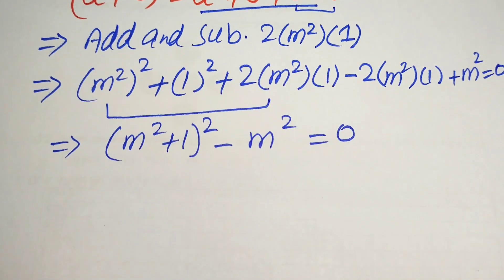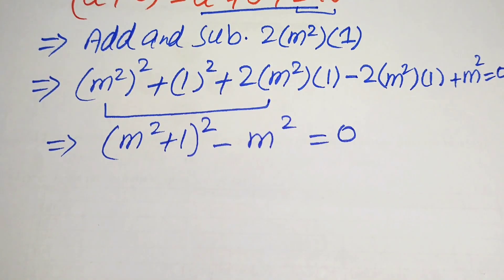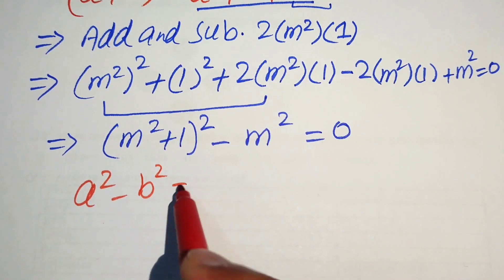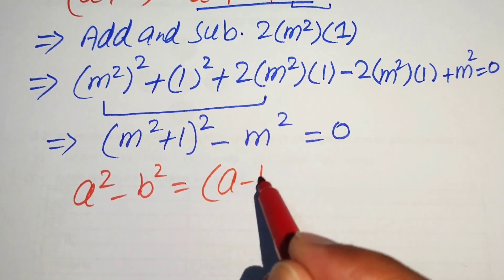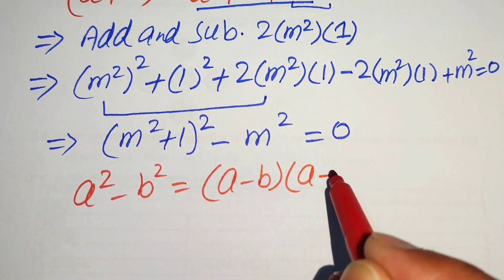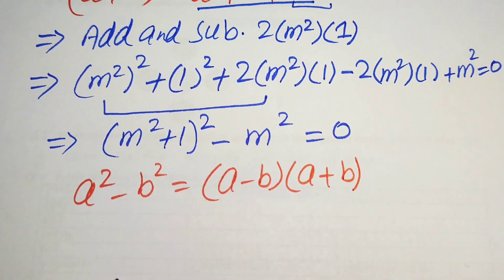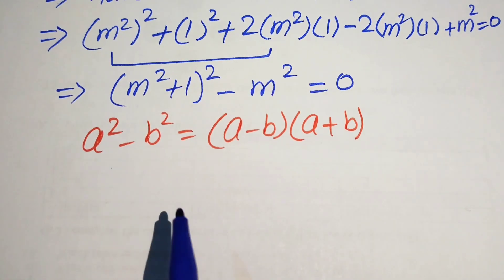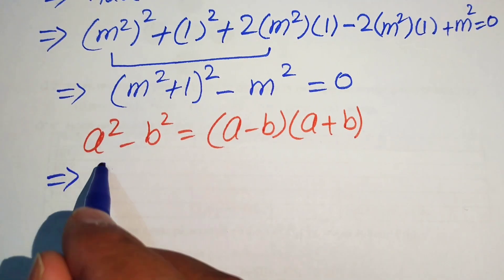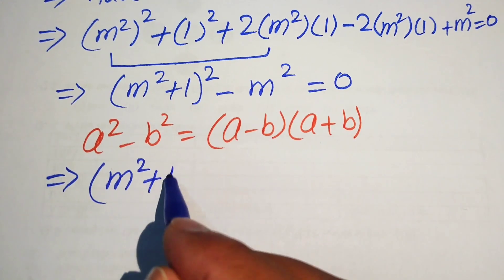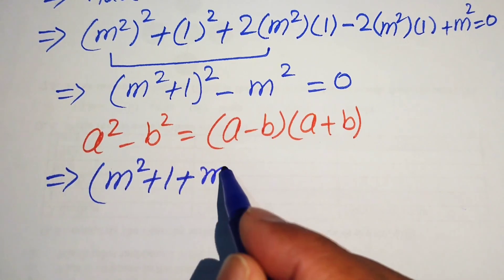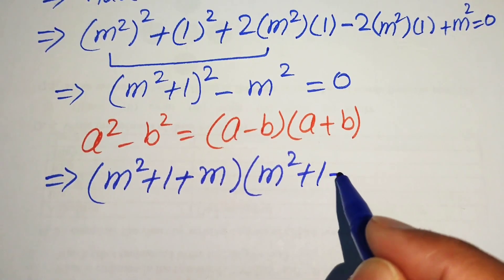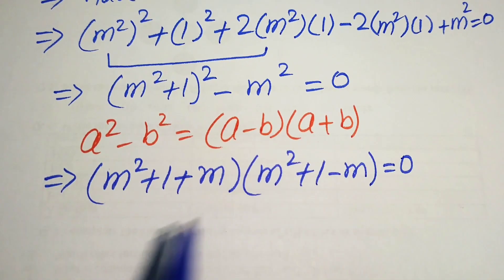Now we need the difference of squares identity: a squared minus b squared equals a minus b times a plus b. Applying this formula, the equation is written as m squared plus 1 plus m, times m squared plus 1 minus m, equals 0.